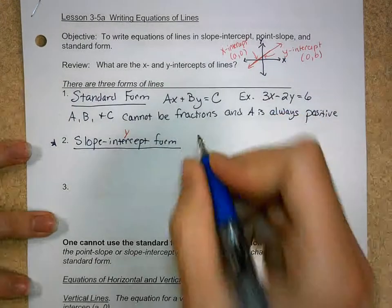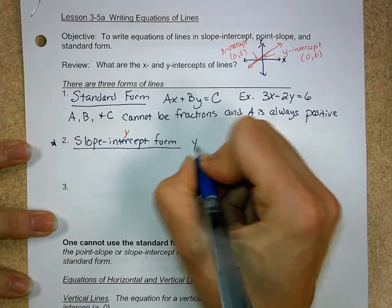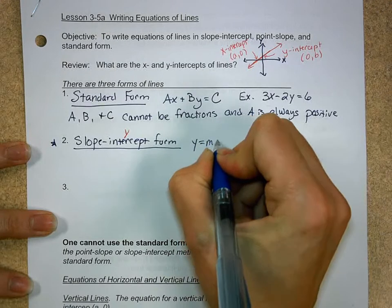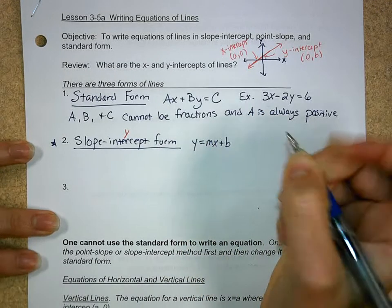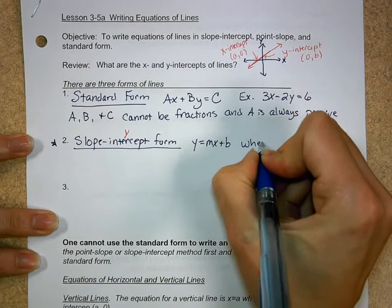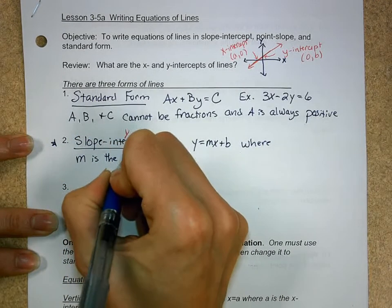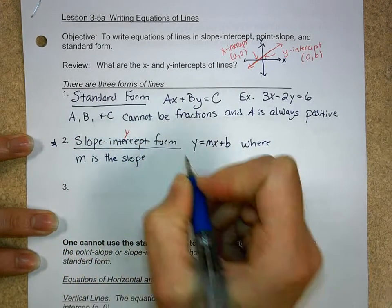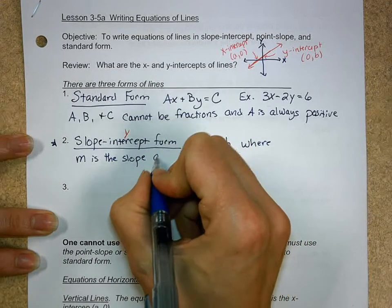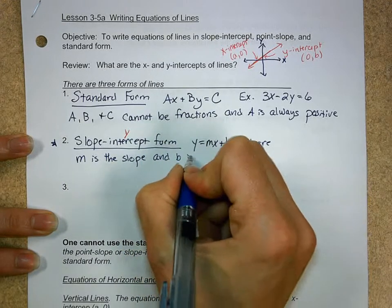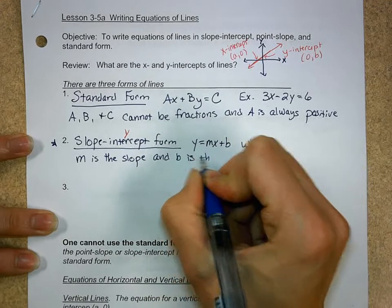So, the form of that line is the one that most of you can rattle off to me. y = mx + b, where m is the slope. Remember, we just worked with slopes yesterday.